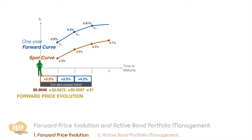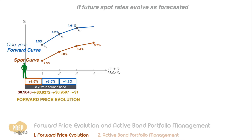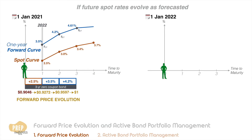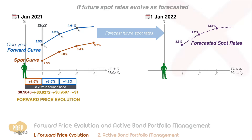Let's see if this works out to be the case if the spot rates pan out as forecasted by the forward rates. To help in the illustration, let's imagine that today is the first of January 2021 and you just bought a three-year zero coupon bond, where its price is forecast to evolve over the next three years as shown. Now let's time travel one year ahead to 2022. Based on expectations from the forward curve in 2021, what should the spot curve look like on the first of January 2022? One very common misconception is to simply copy over the forward curve, which is not accurate.